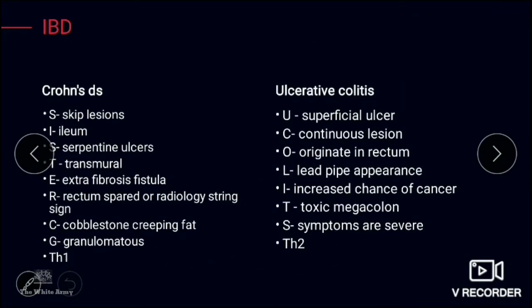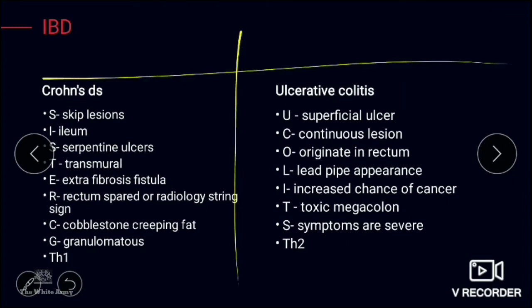A useful mnemonic for Crohn's disease is 'SISTER': Skip lesions, more common in the Ileum, Serpentine ulcers, Transmural ulceration, Extra fibrosis/fistula, Rectum is spared. Radiologically, a string sign is seen. Grossly, a cobblestone appearance is present, and in the serosa, there is creeping fat — mesenteric fat extension around the serosa.